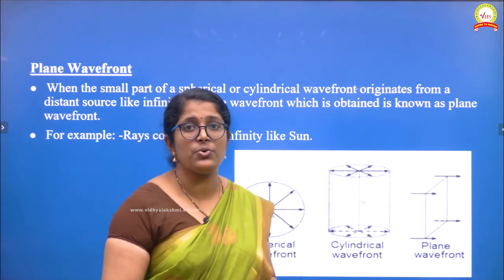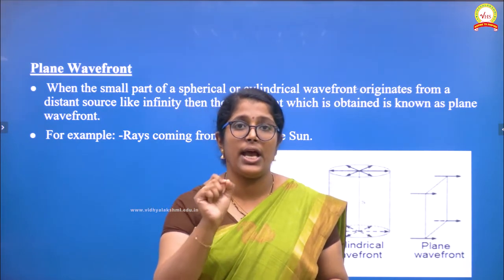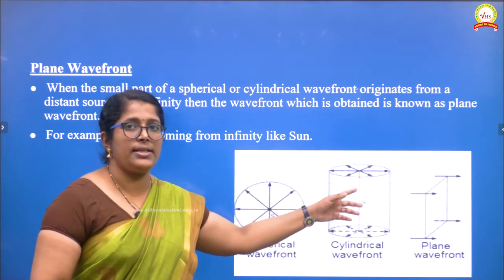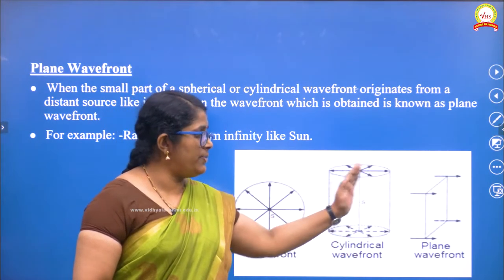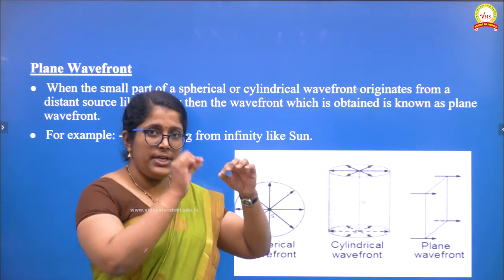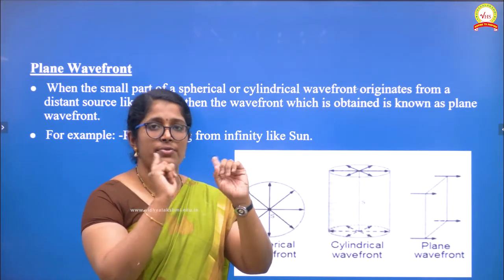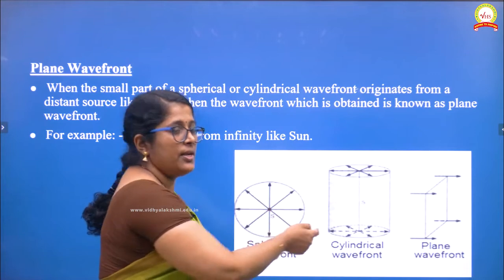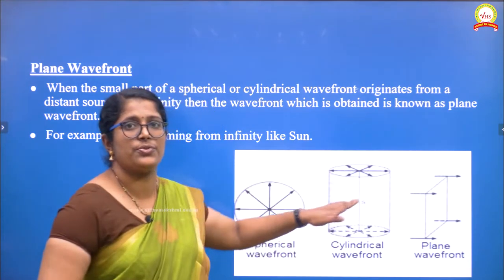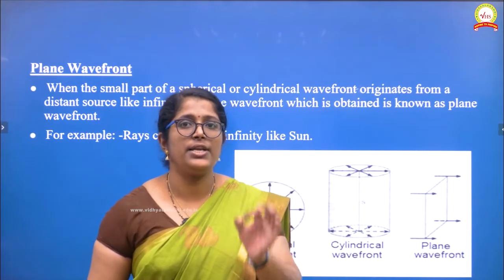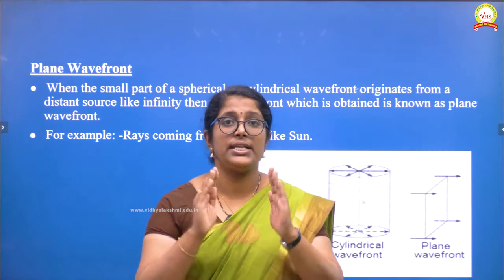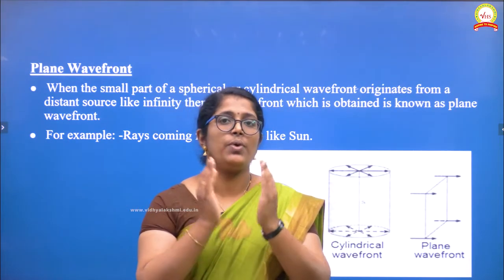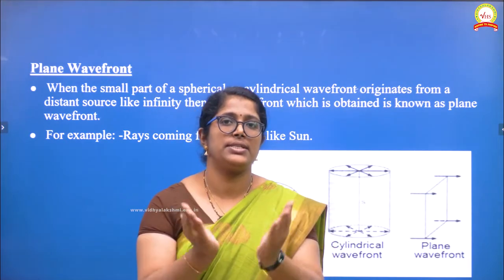Cylindrical wavefront: suppose the source is a linear one — just like a line source or a slit. In such a case, each and every point of the slit will be emitting in all directions, acting as a wavefront source. When you consider each point, it creates its own circular wavefront. Together, the line source will generate a wavefront in the form of a cylinder. Unlike a point source, this line source acts as a cylindrical source, and whatever wavefront you get will be in the form of cylinders.